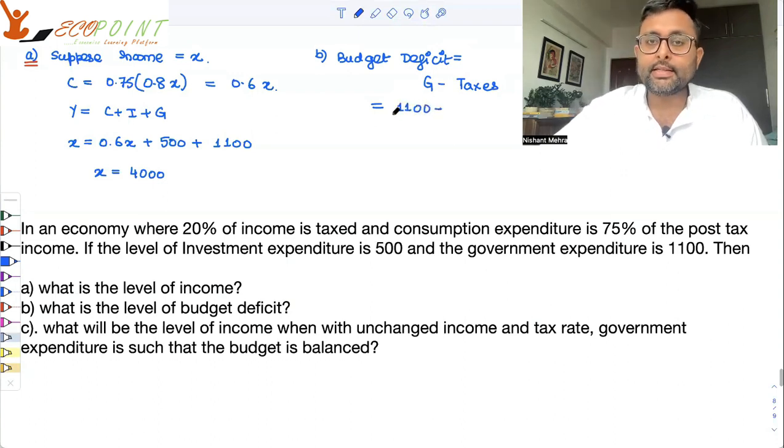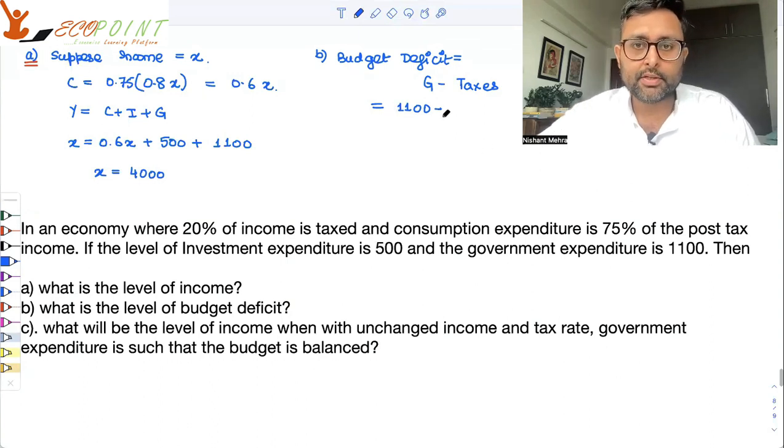So, what is government's expenditure? 1100. What are government taxes? 20% of the income. So, how much income is generated? 4000. 20% of that is taxed. So, that is what the government income is.